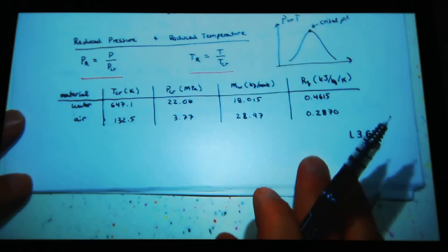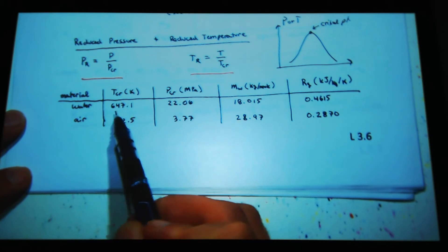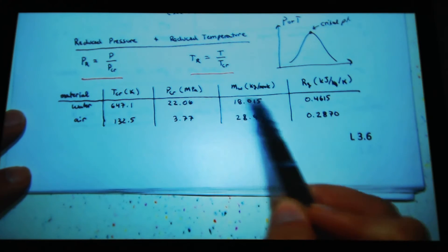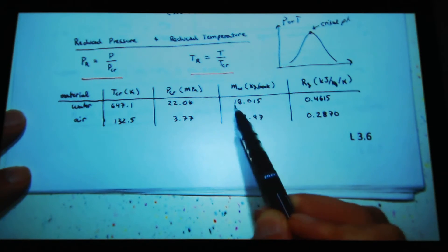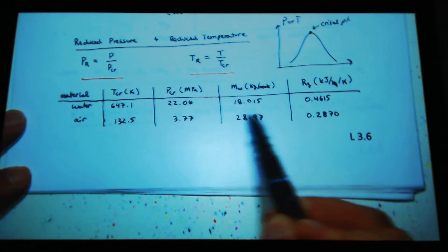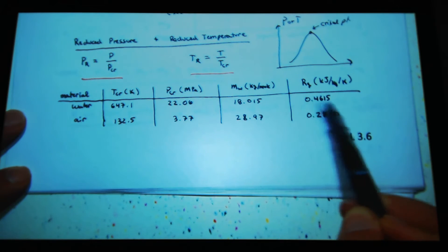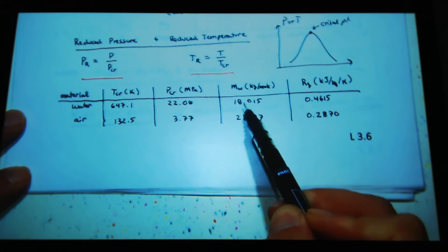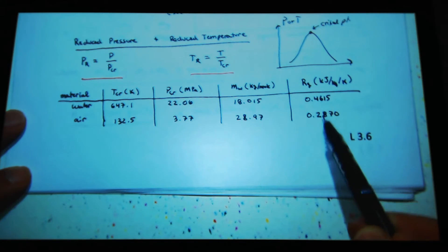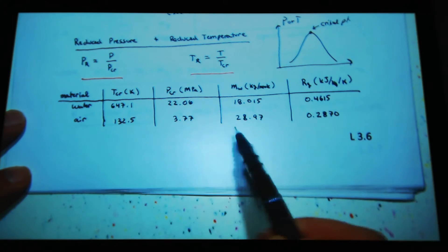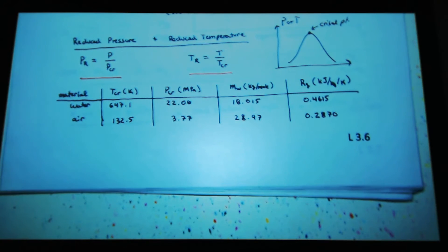This table here basically gives, if I have water, the critical temperature is that, critical pressure is that. So I have molecular weights. I can just look up with the periodic chart and get my molecular weight. And then this is a gas constant you can find. I can calculate it based off of this, but a lot of times you'll just look this up in the back of the book.